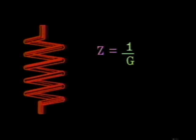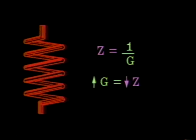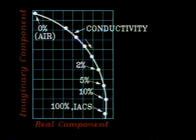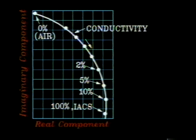As the test coil is influenced by different conductivities, its impedance varies inversely to conductivity. A higher conductivity causes the test coil to have a lower impedance value. Graphically, the coil's imaginary component is represented by the y-axis and the coil's real component appears on the x-axis. The zero percent conductivity point, or air point, occurs when the empty coil's reactance is maximum. The figure represents a measured conductivity locus. Materials with different chemical compositions have varying conductivity ratings, but conductivity is influenced by many other factors.